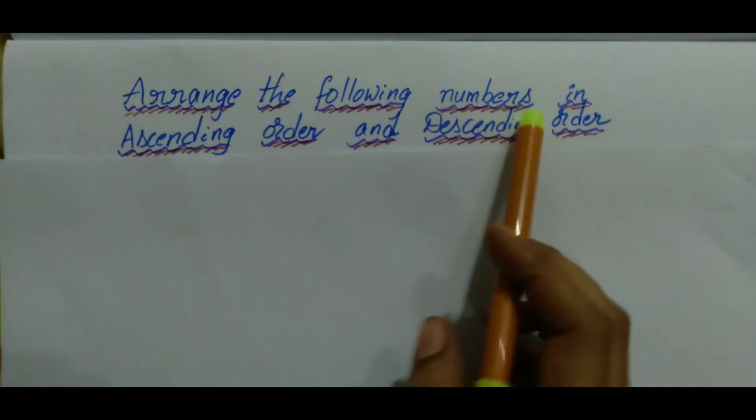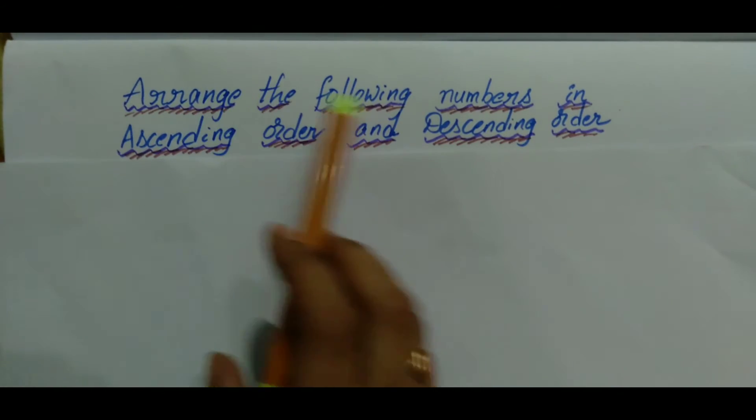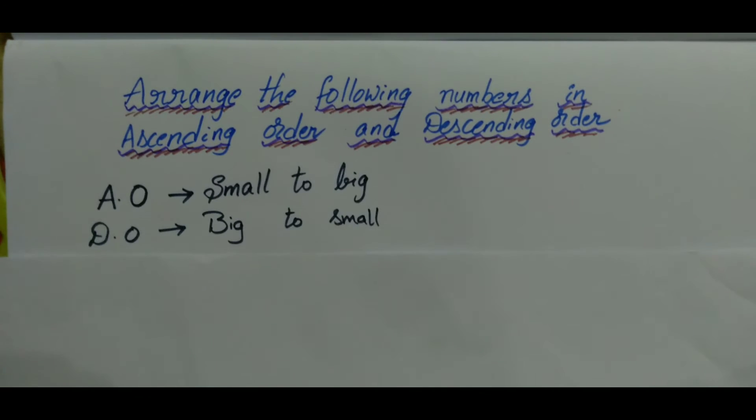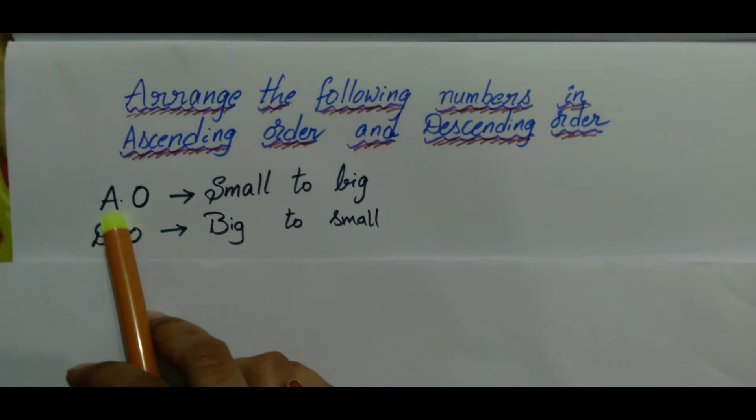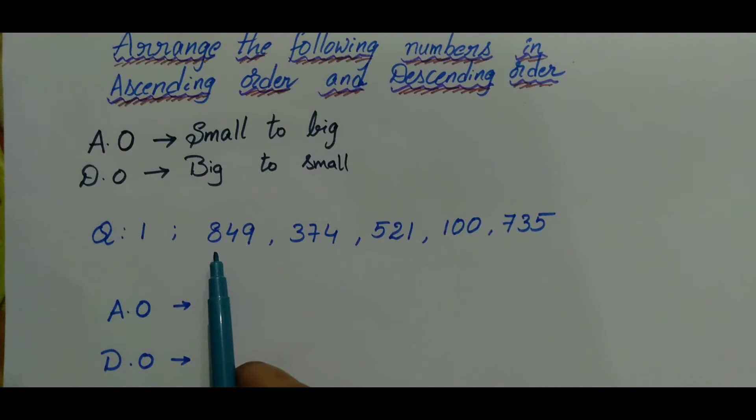Arrange the following numbers in ascending order and descending order. As we know ascending order means small to big and descending order means big to small. So here we have written ascending order small to big and descending order big to small. For example,